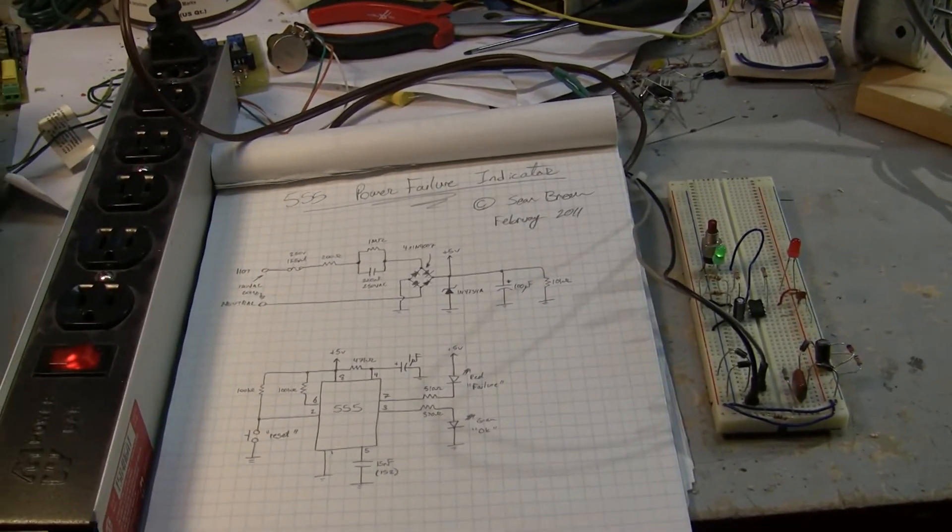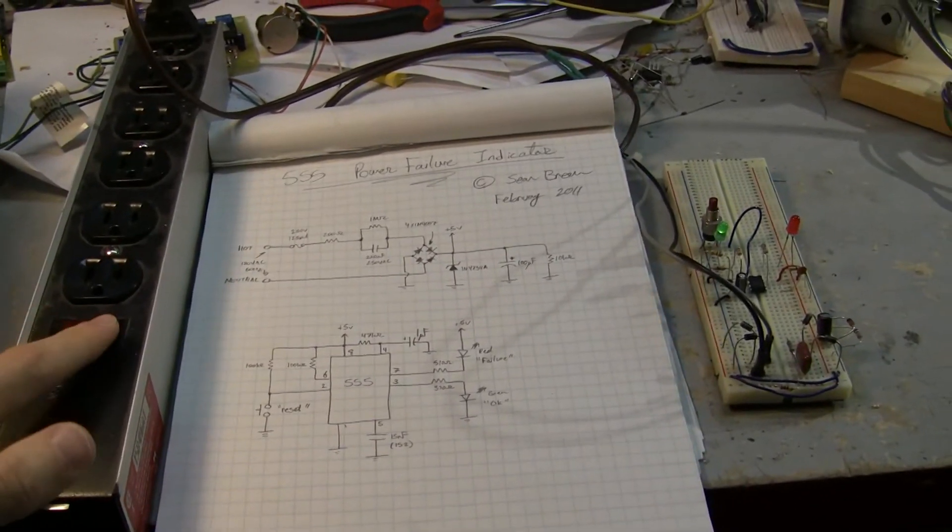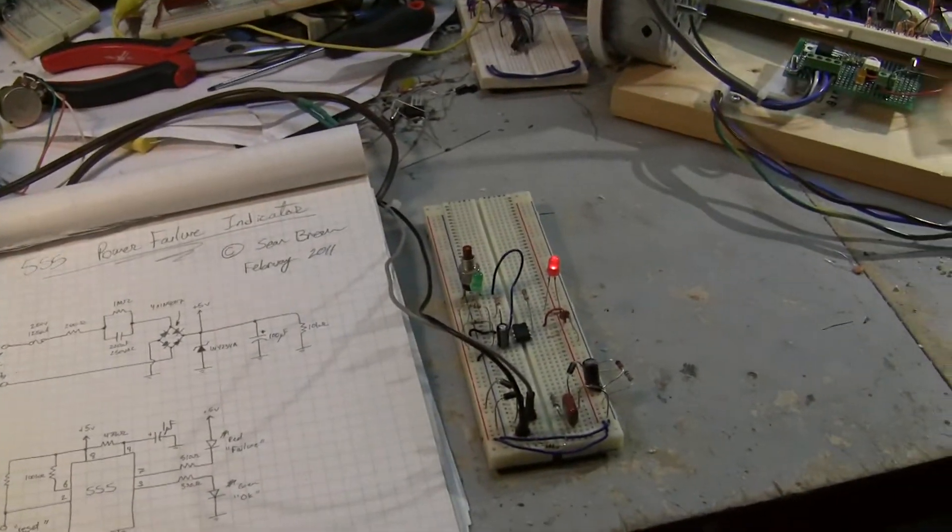So everything's good. This circuit would just sit like this and as long as there's power, that green LED will stay on and you say okay, I haven't had a power failure. Now if I simulate a power failure by turning the switch, device shuts off.